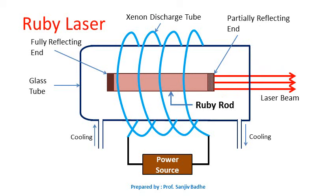During the operation of a ruby laser, a large amount of heat is generated. To remove this heat, a water circulating system is used.